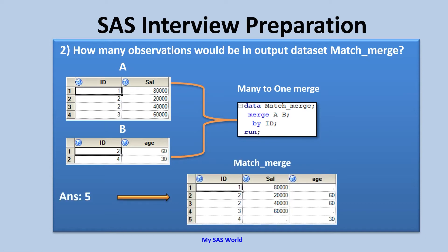How many observations should be in the output data set? The answer is five observations. Let's discuss how we reach five. By-grouping is happening and merging is based on that. The first observation is read from dataset A and the first observation from dataset B — ID is 2, but the IDs are not matching. So the first observation is written to the output, and the value for the age variable is missing because age comes from the second data set.